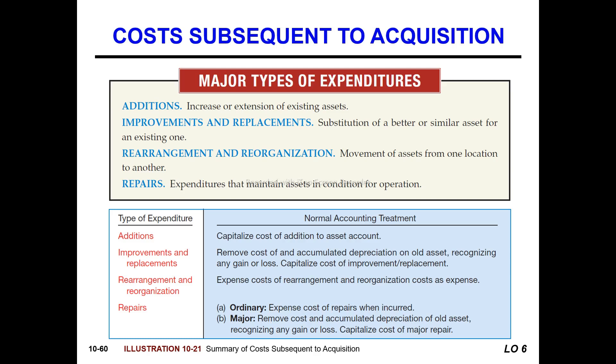Rearrangement and reorganization is the moving of production location. The rearrangement cost is to be able to improve operations. Repairs are expenditure to maintain the asset in a condition for normal operation.